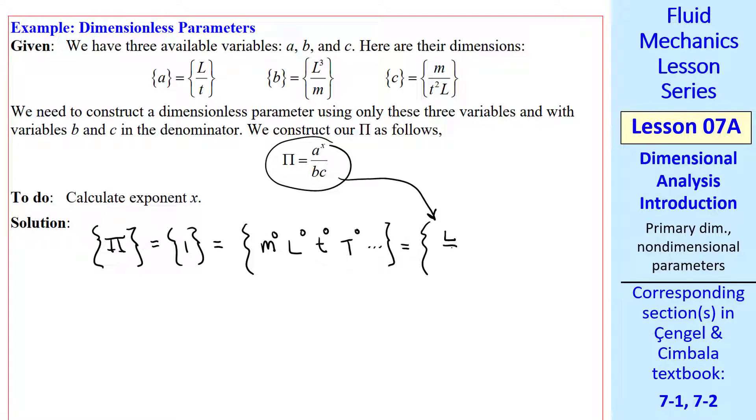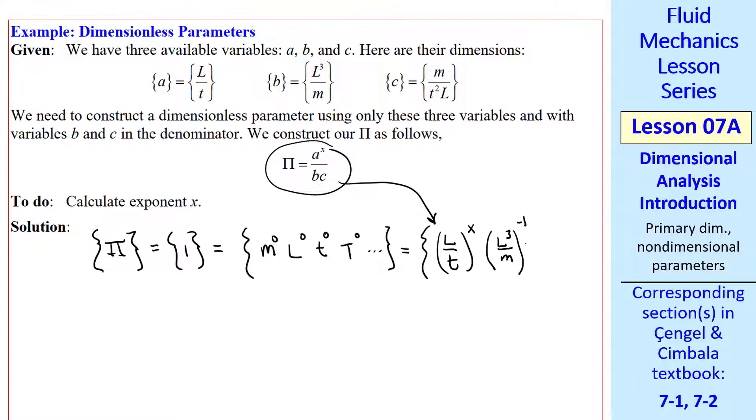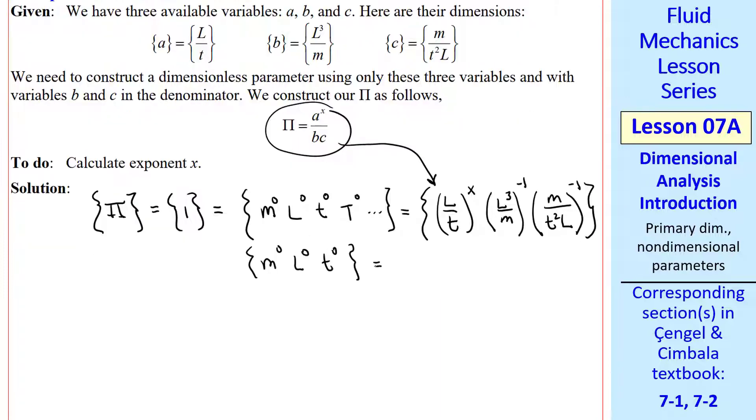We form an equation by applying the dimensions of the pi. A has dimensions of L over T, and that's raised to exponent X. B has dimensions of L cubed over M, so we write L cubed over M to the negative 1, since B is in the denominator. Similarly, C is in the denominator with dimensions of M over T squared L, so we write M over T squared L to the negative 1. Since we don't have temperature or any of the other primary dimensions, we know that M to the 0, L to the 0, T to the 0, must equal the same thing on the right-hand side.